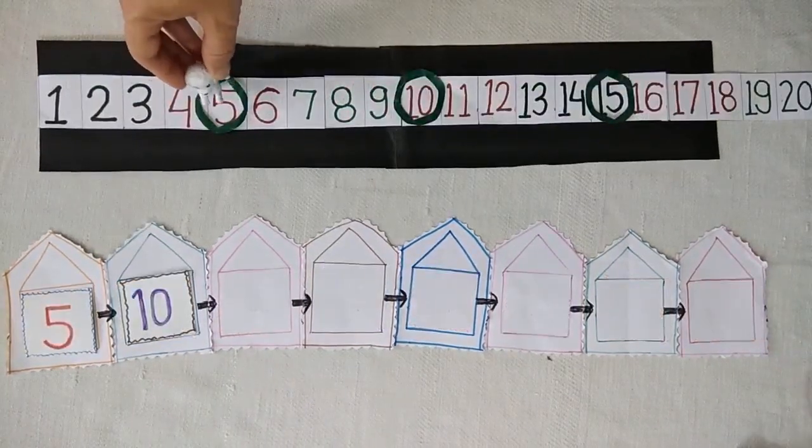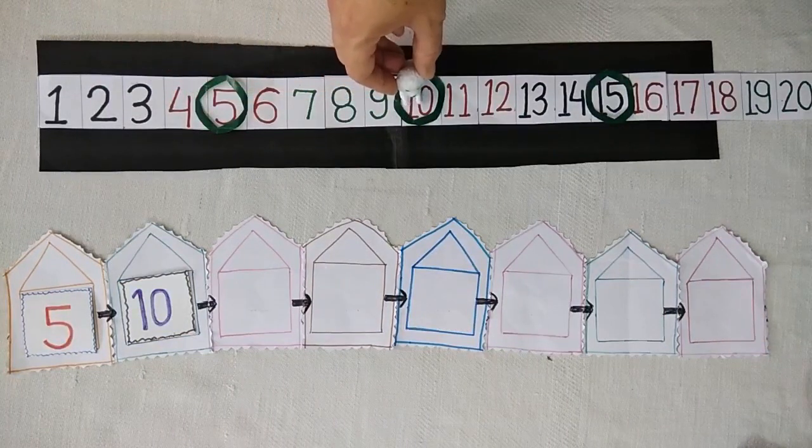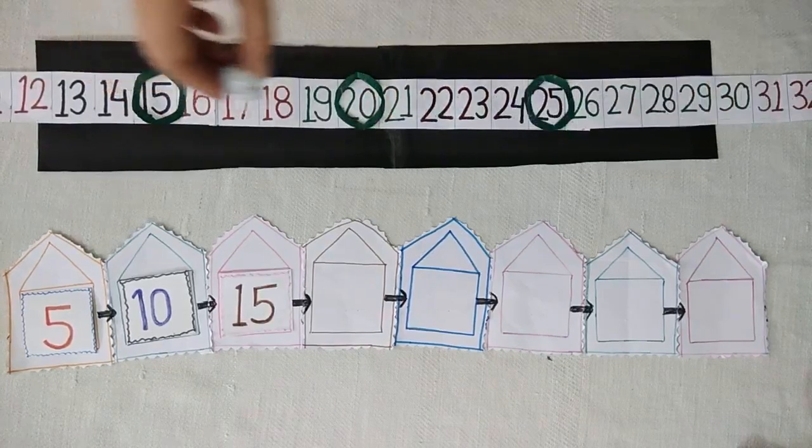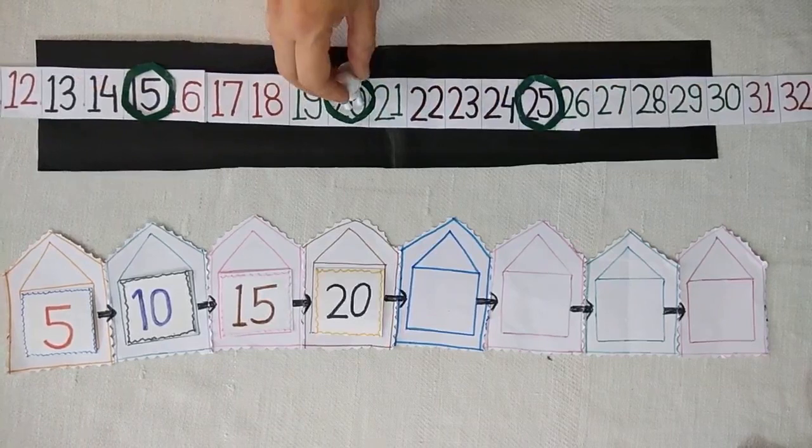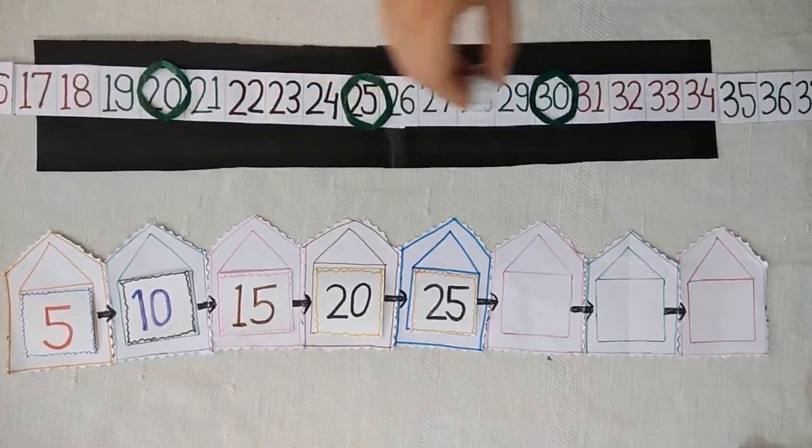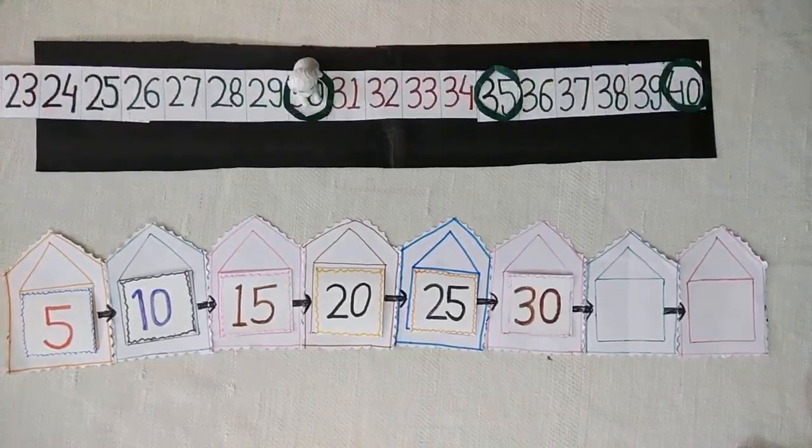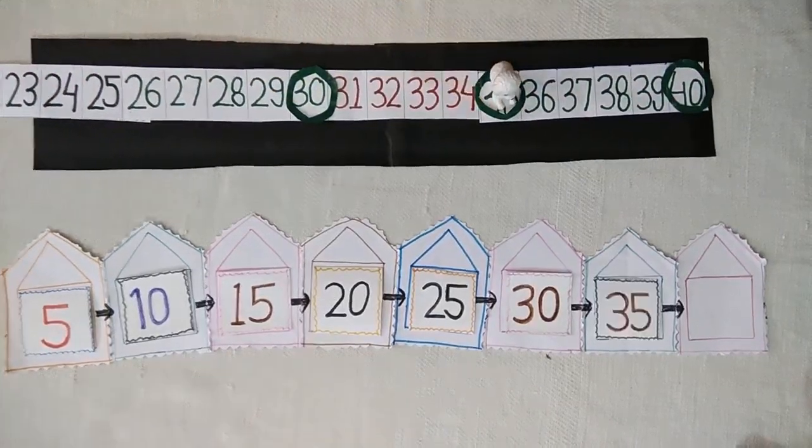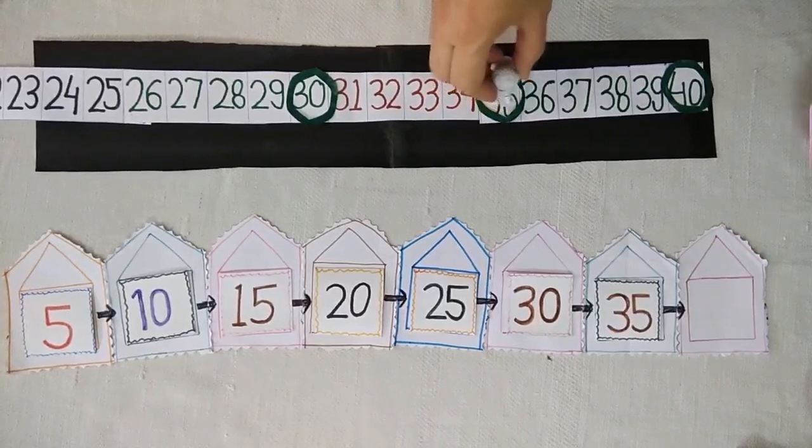Standing on 5, it jumps to 10, 15, 20, 25, 30. Then jumps to 35 and 40.